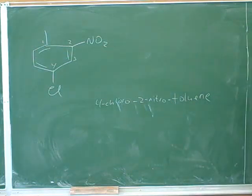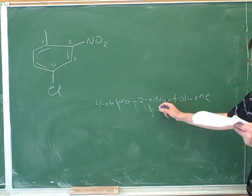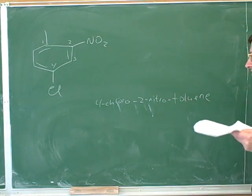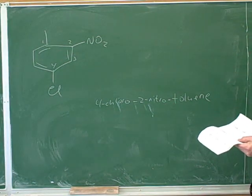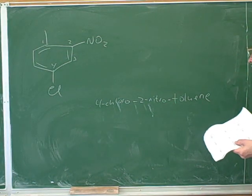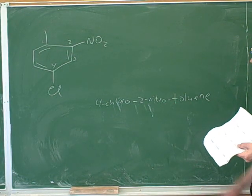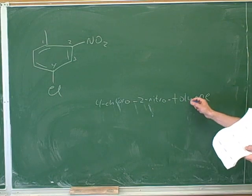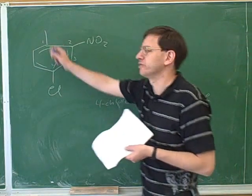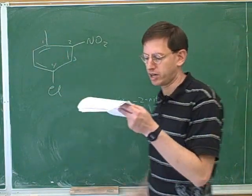Ortho, meta, and para are only used when there's exactly two substituents on the benzene, so the only possible name here is 4-chloro-2-nitrotoluene. We don't need to say 1-toluene because by definition, the methyl group would get the number one carbon.